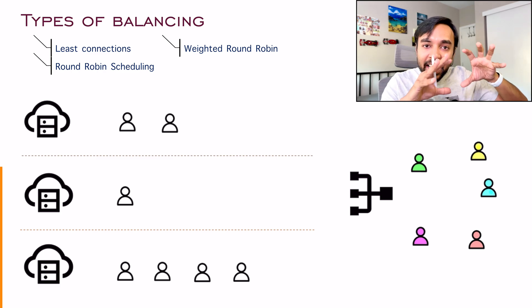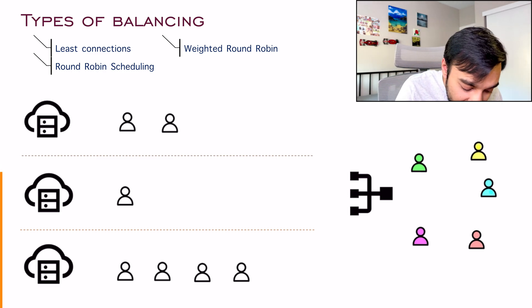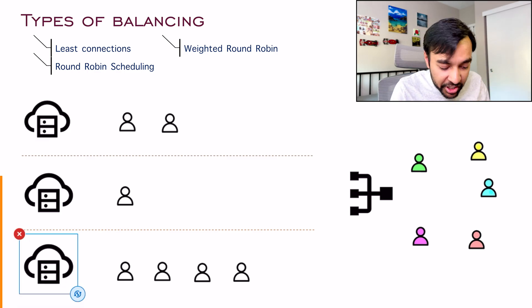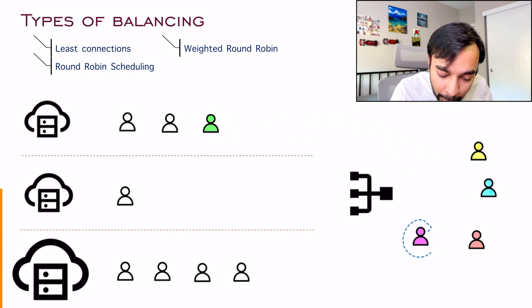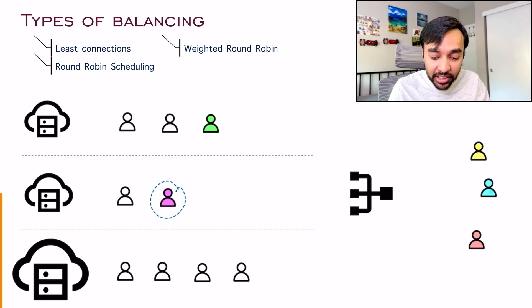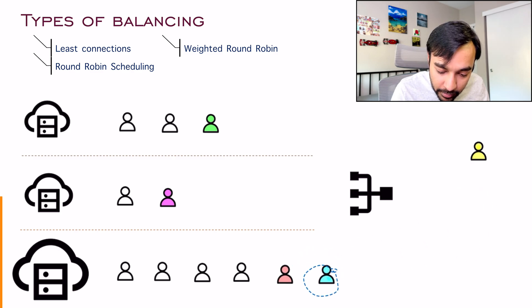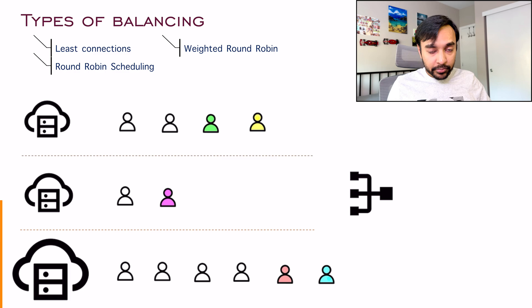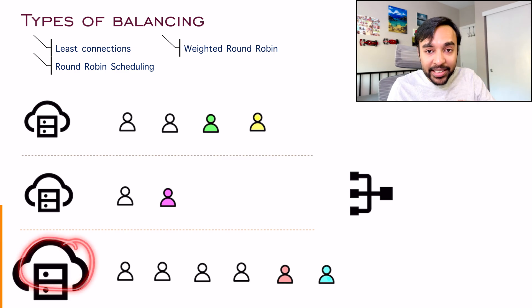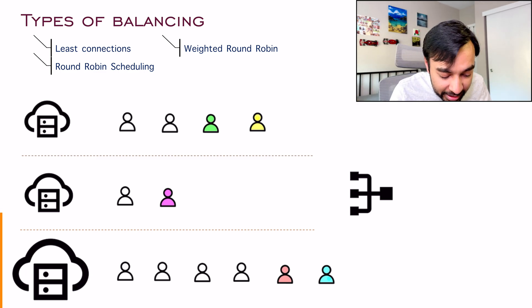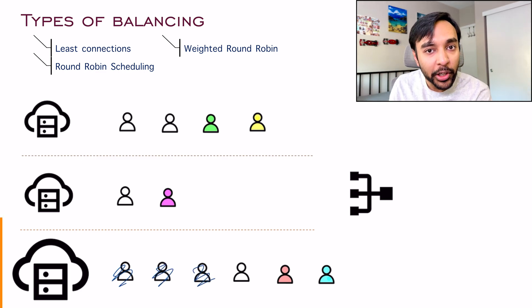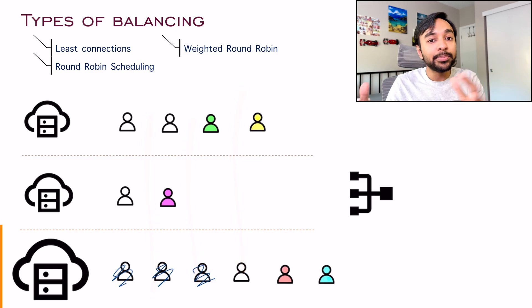In a weighted round robin scheduling method, we allot all of the clients based upon the server's capacity. So let us say I have this scenario setup, right? There is one catch though. This particular server is more efficient than the rest of the servers. This server is huge and can process more requests. So what could happen is instead of allotting all of the clients one by one, when it comes to the efficient server, you can allot them two clients and all of the servers one client at a time. So we are doing weighted scheduling to maintain a balance between all of these servers.